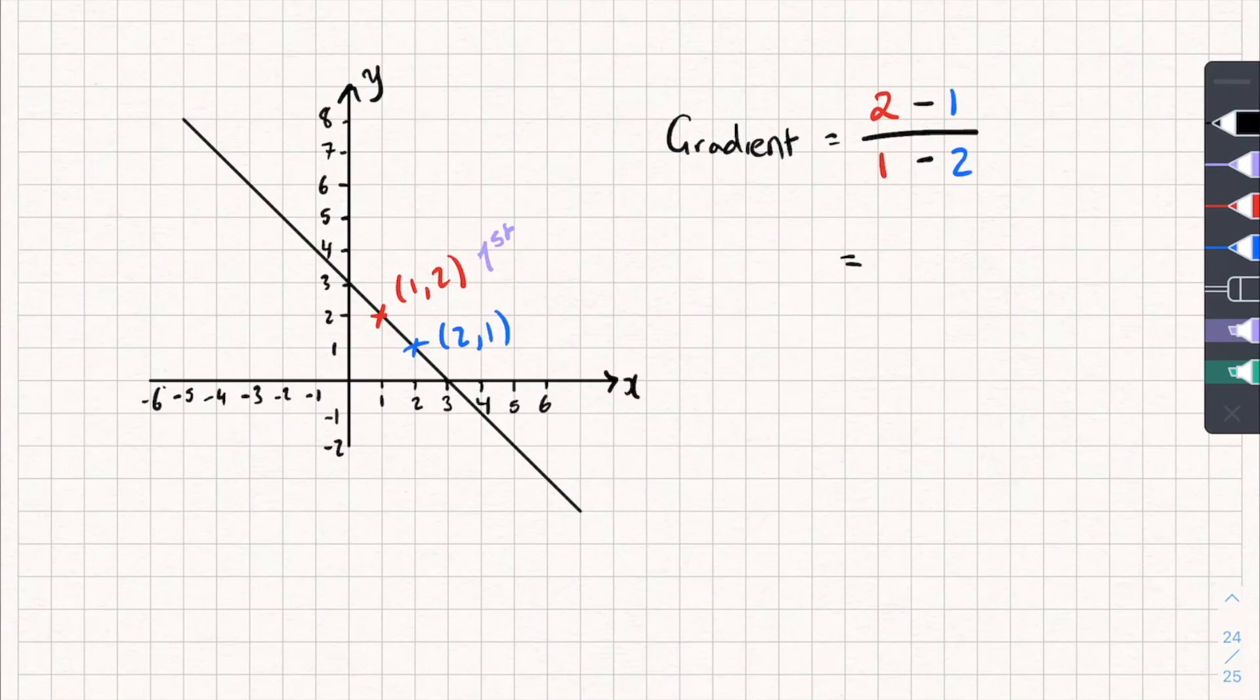And let's simplify that so we get 2 subtract 1, which is just 1, divided by 1 subtract 2, which is negative 1, and 1 divided by negative 1 gives you a gradient of negative 1. And that's it.